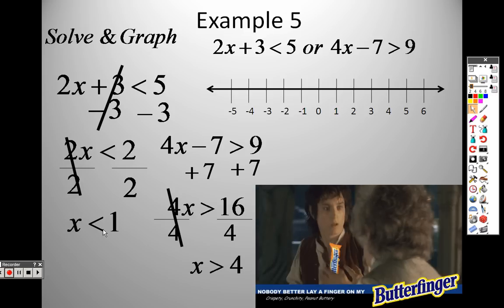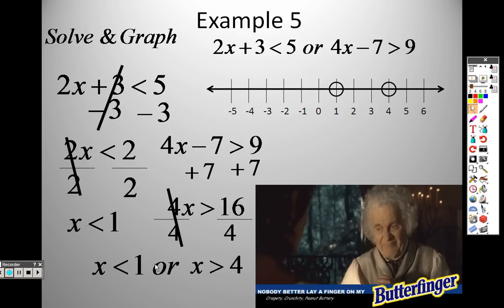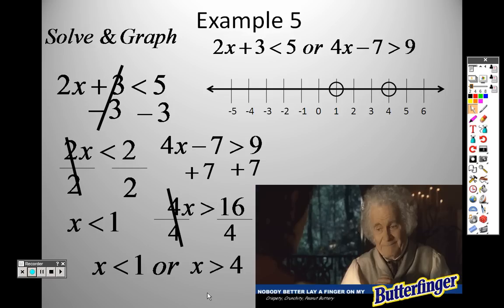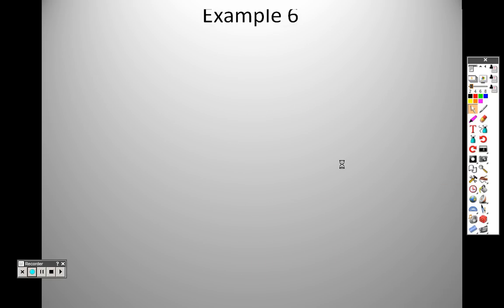So I need to graph both of these items. And since they are both less than or greater than, that means I have an open hole at 1, and an open hole at 4. This arrow is facing the left, so I shade everything to the left. And that one's to the right, so I shade everything to the right.